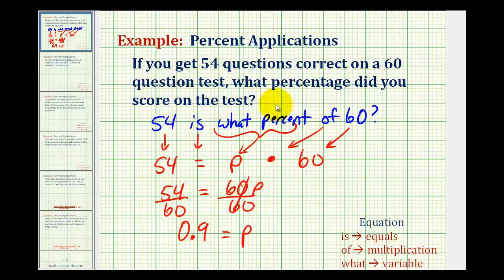Now we do have to remember that we are solving for a percentage, and this is the percentage expressed as a decimal. So we have to convert this to a percentage by multiplying by 100 and adding a percent symbol, which is equivalent to moving the decimal point right two places. So this is equivalent to 90 percent.